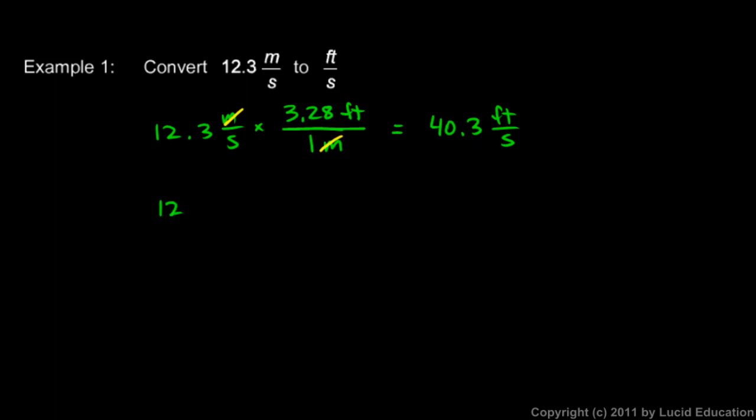Now, you could do this incorrectly. You could have said this, 12.3 meters per second. And the technique here is to always multiply by one. That's true every time you do one of these unit conversions. You always multiply by one. But if you set it up incorrectly, watch this. I know that one meter is equal to 3.28 feet. So this fraction is equal to one because the top, one meter, is the same thing as the bottom, 3.28 feet.